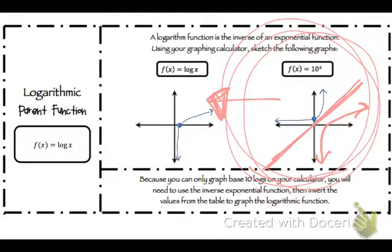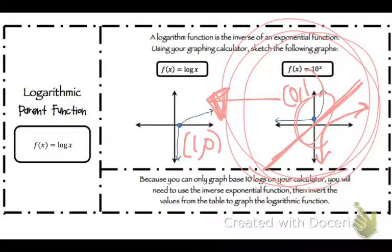The exponential crosses at (0, 1), not (1, 0). The log graph crosses at (1, 0). It goes along the y-axis instead of the x-axis and then goes up to infinity. That's just the basic gist of these two graphs — make sure you have those drawn.